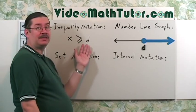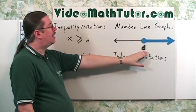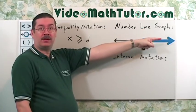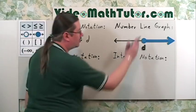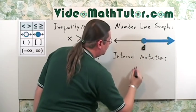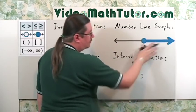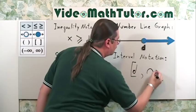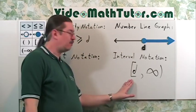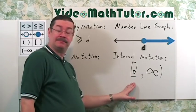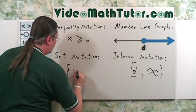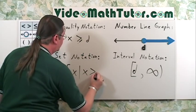X is greater than or equal to d. On the number line, mark d and make a solid dot since it's greater than or equal to — include it. It's greater than, so shade to the right. For interval notation, start at d with a square bracket since it includes d, and go to positive infinity with a parenthesis. Keep in mind: the bracket is with d, not with infinity — infinities always use parentheses. For set notation: the set of all x's such that x is greater than or equal to d.